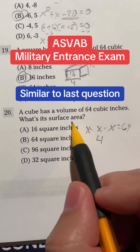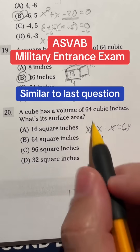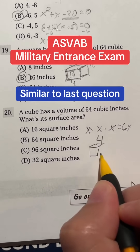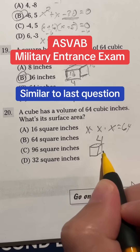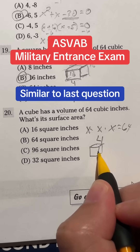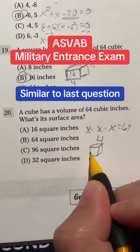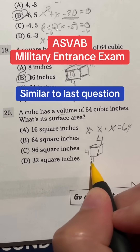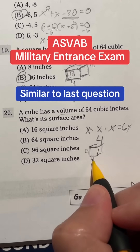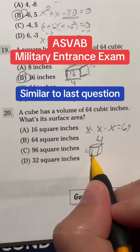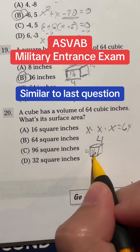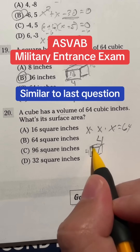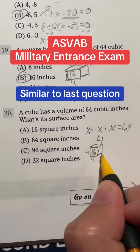Now it says what's the surface area of that same cube. Surface area is when you find the area of all the outside surfaces of your three-dimensional shape and add them up. Let's first look at the side here — this one would be a 4 by 4, so 4 times 4 is going to give me 16. I have an area of 16, and there are six sides on a cube like this.